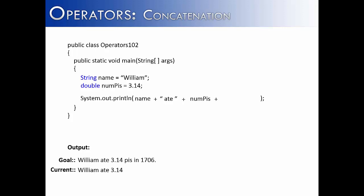Next we need another concatenation, and so we use the plus sign. We're going to add the last string literal, which is going to say pies in 1706. So we have reached our goal of saying William ate 3.14 pies in 1706.